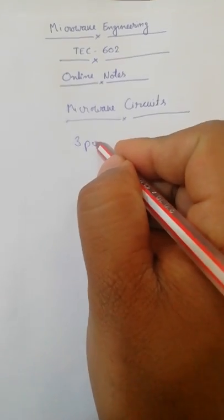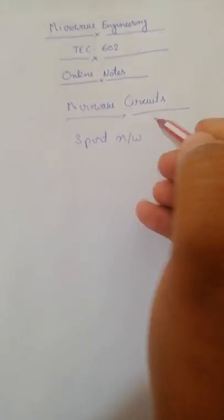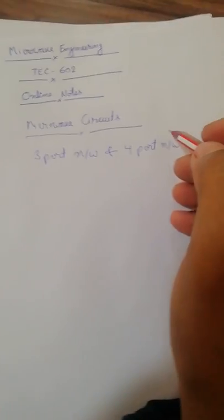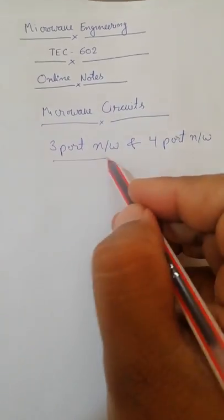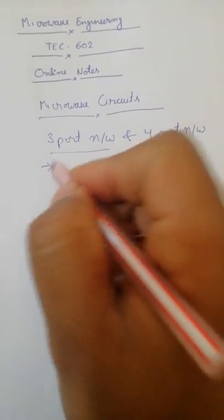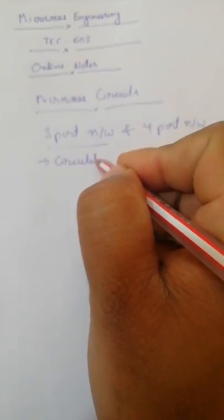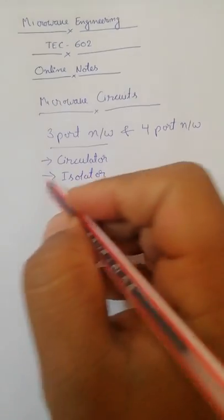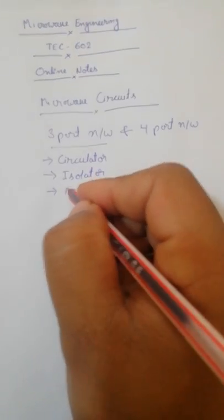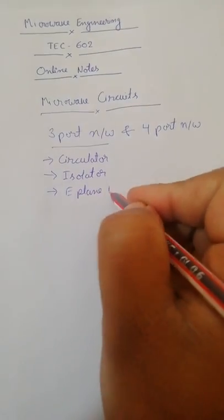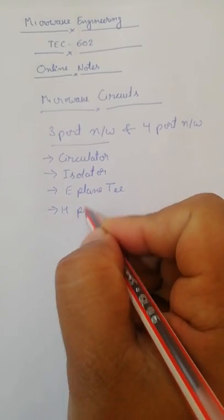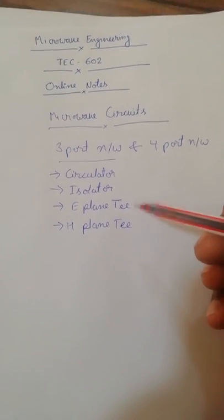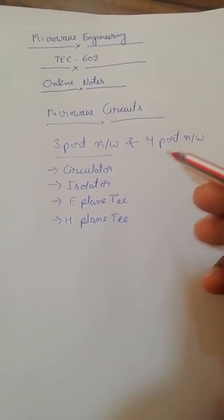The three-port network consists of things like circulator, isolator, and some T-junctions like E-plane T and H-plane T. We will discuss all of these three-port network devices as we go forward.